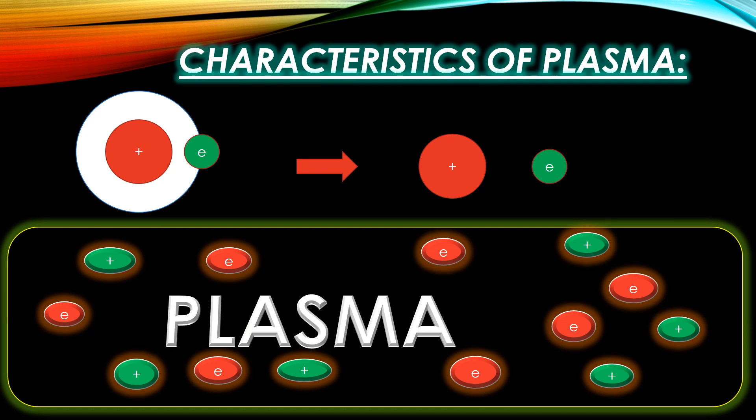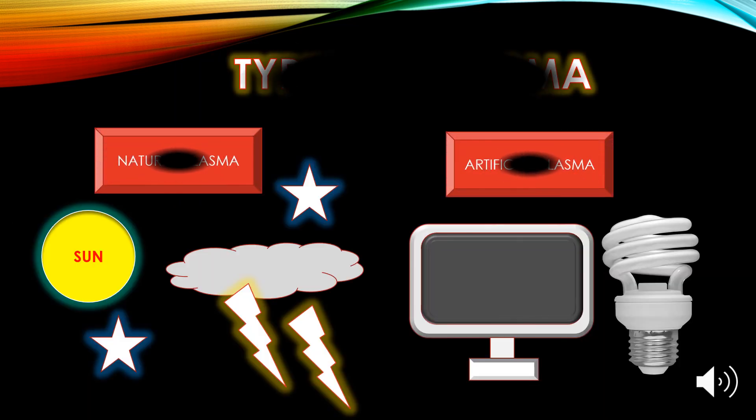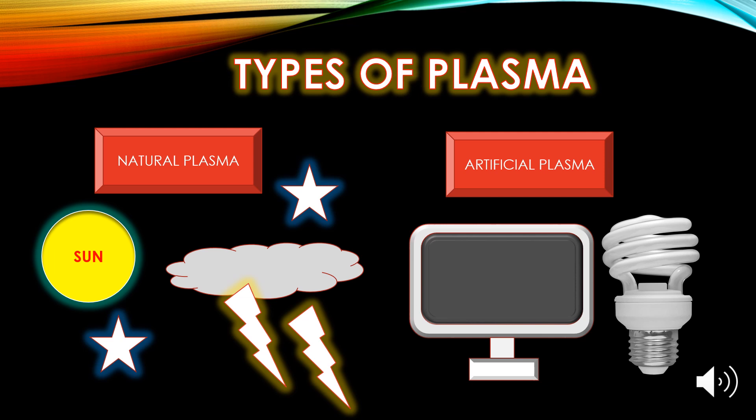Regarding the characteristics of plasma: since plasma consists of ionized gases, it conducts heat and electricity. Plasma has many unique properties that are different from solids, liquids, and gases.